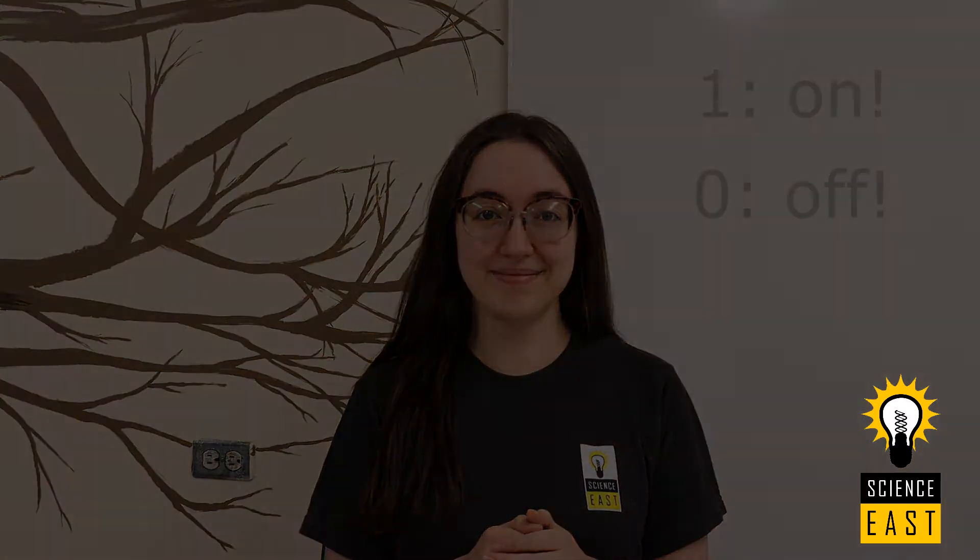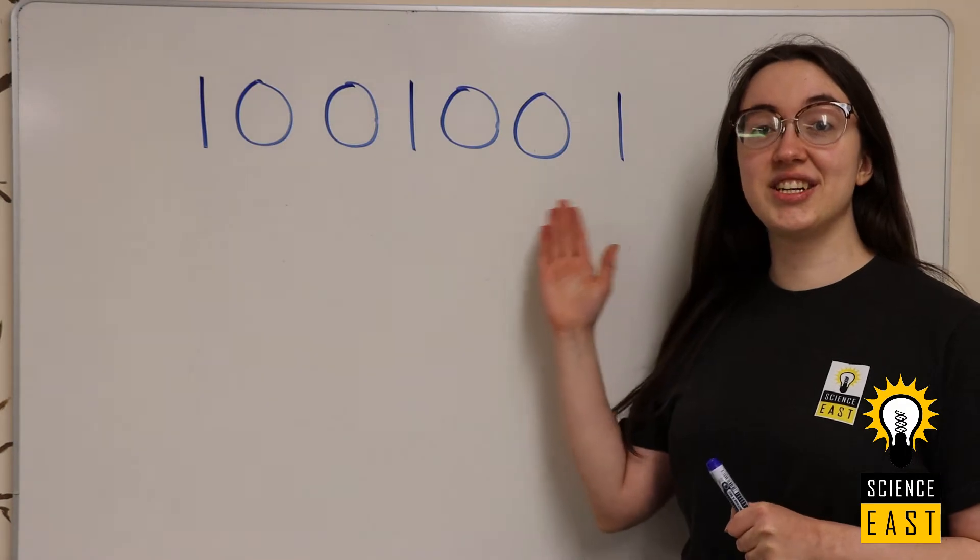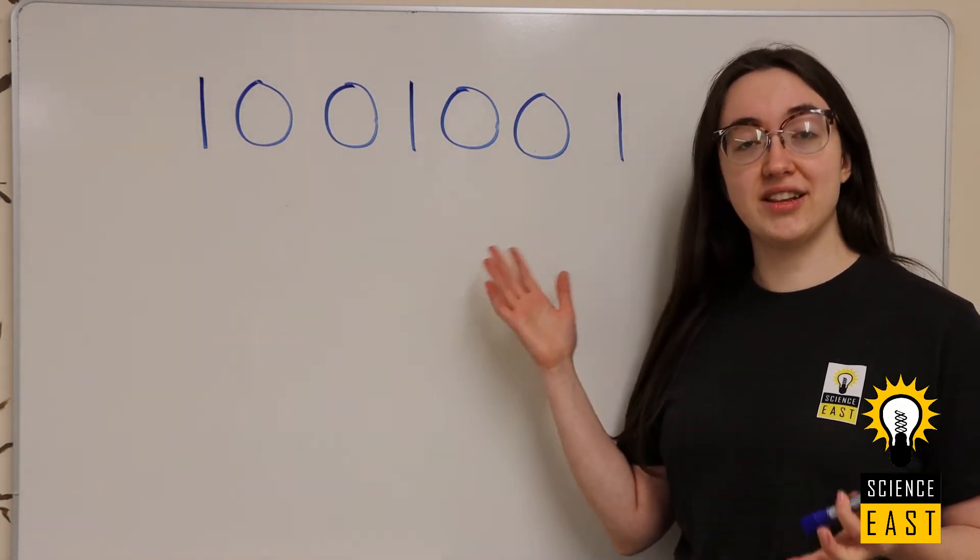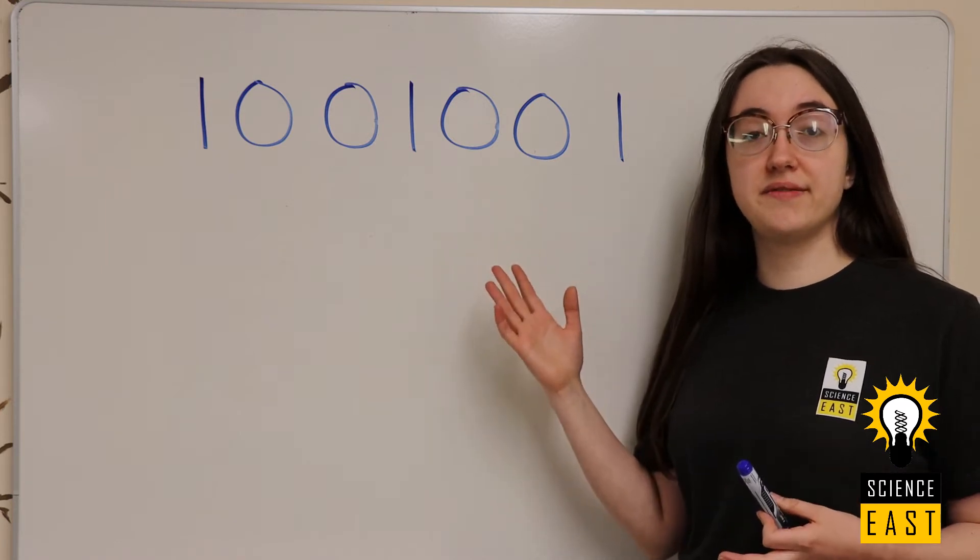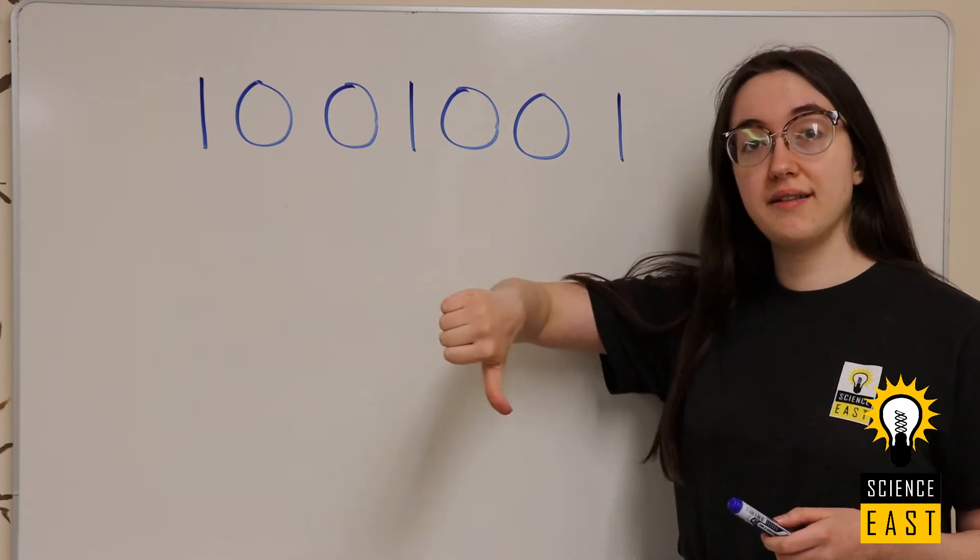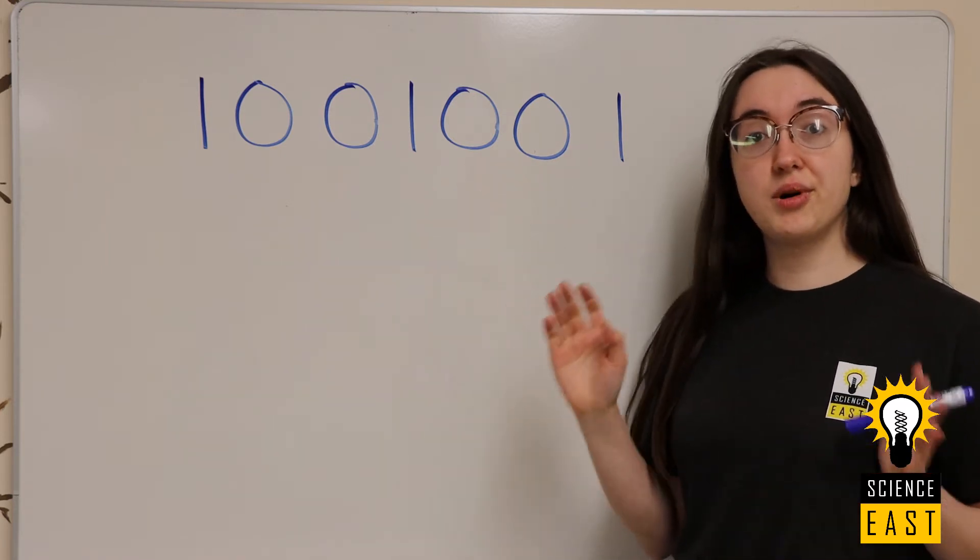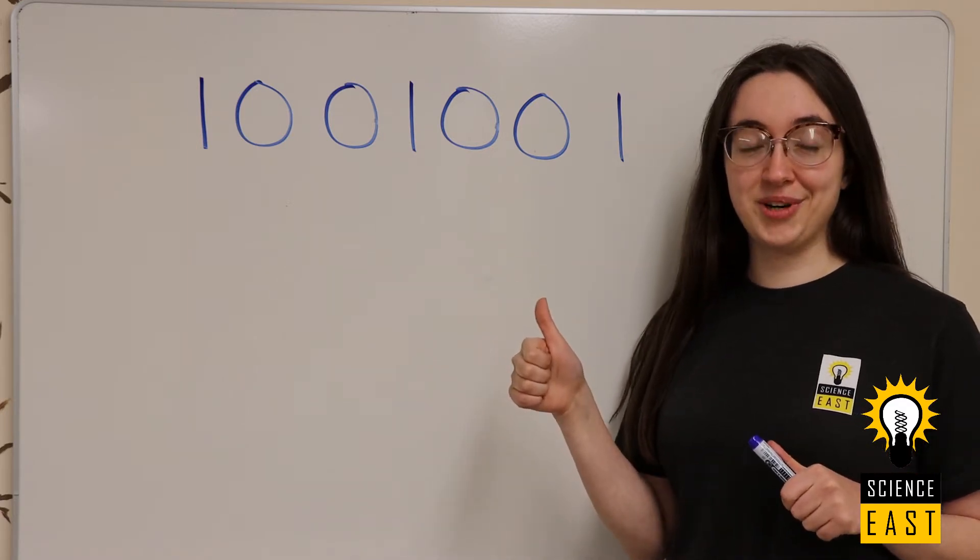Let's start with numbers. Each digit will represent a certain value and the 1 or 0 will tell us whether that value is on or off. Then we add up all the values that are on and we get our normal number.